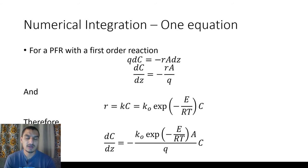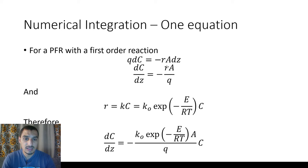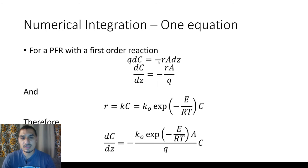When you model the plug flow reactor, because it's a distributed parameter system, you take an increment of the reactor and do a balance equation over it, then integrate over the whole length. Doing the mass balance on the increment gives you Q·dC, where Q is the flow rate and dC is the change in concentration inside the increment. This equals negative R_A · dz, where R_A is the production or consumption of species due to reaction. You end up with dC/dz = -R·A/Q, assuming the species is a reactant.